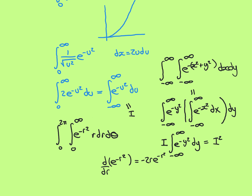e to the negative r squared is not easy to integrate at all — finding an antiderivative is hard. But when you have r times e to the negative r squared, that we can handle. The derivative of e to the negative r squared is e to the negative r squared times the derivative of negative r squared, which is negative 2r, giving negative 2r e to the negative r squared. Therefore, taking negative one half of that, its derivative is r e to the negative r squared. So the antiderivative of r e to the negative r squared is negative one half e to the negative r squared, and we can use the second fundamental theorem of calculus.